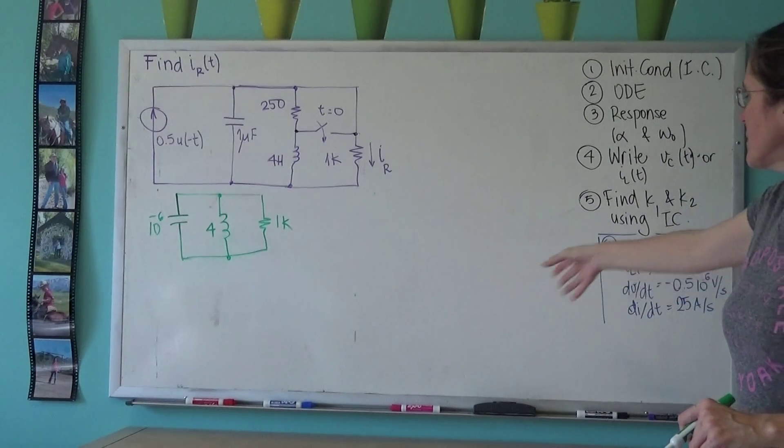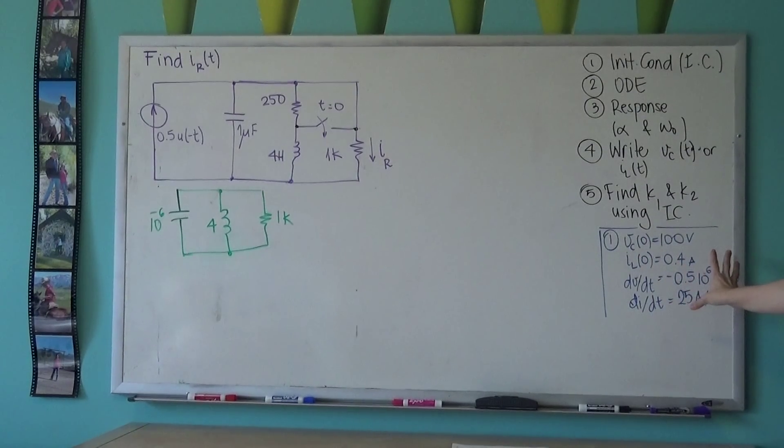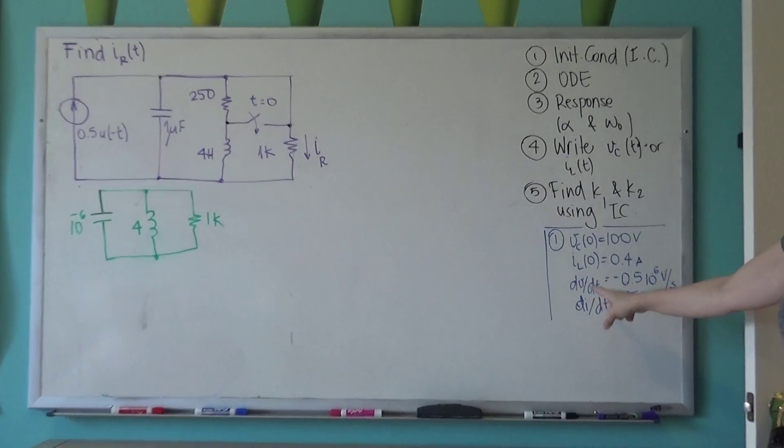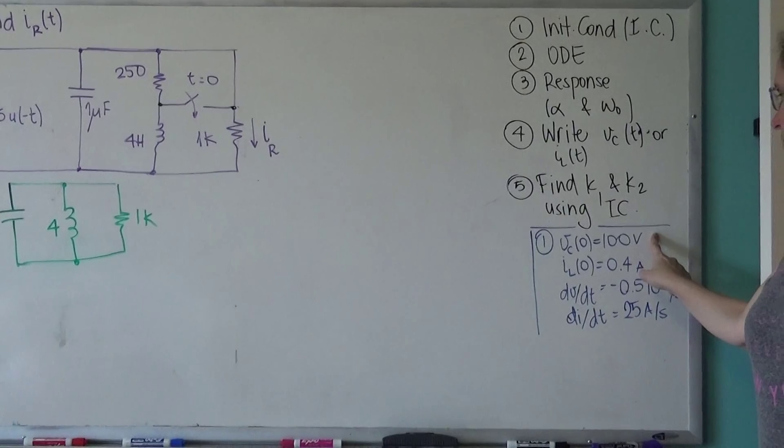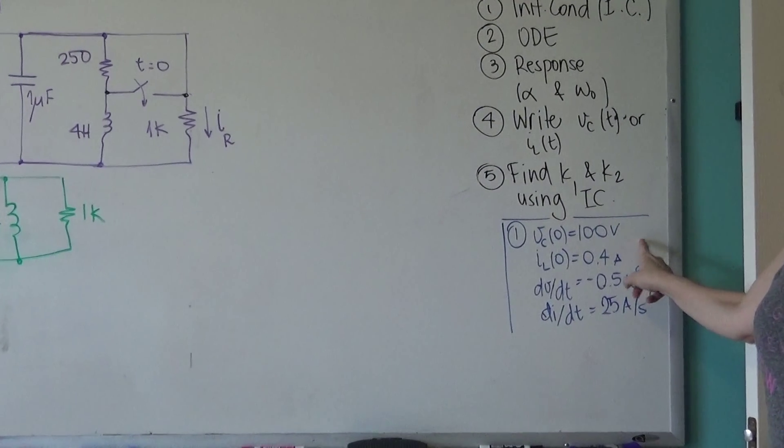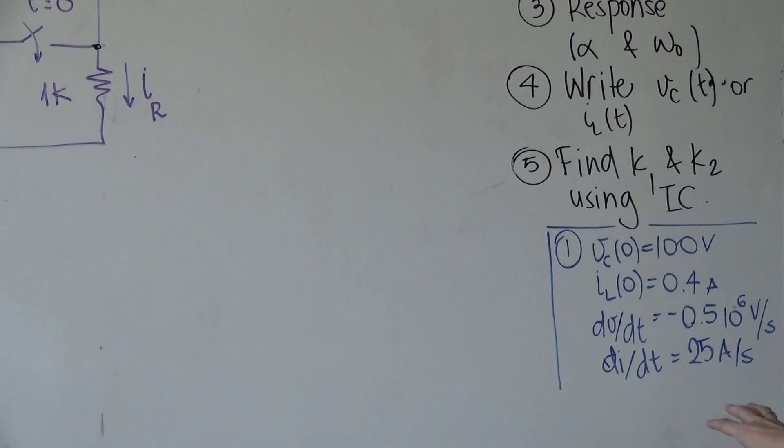Okay, so in the previous videos we found these two sets of initial conditions: voltage on the capacitor at zero, current at zero, and then the dV/dt, dI/dt.